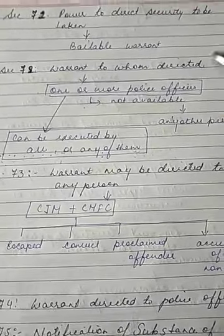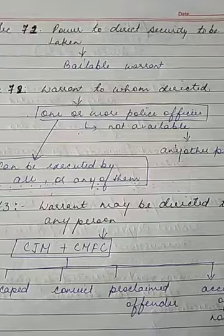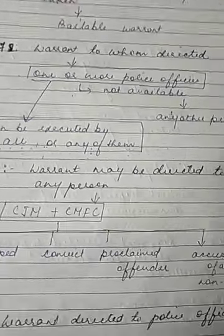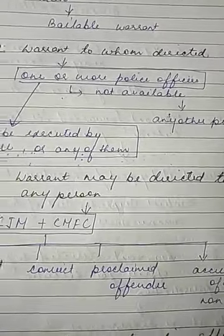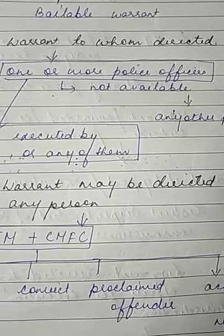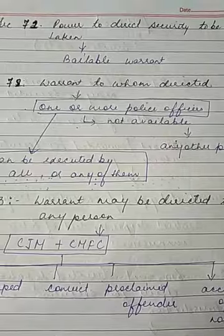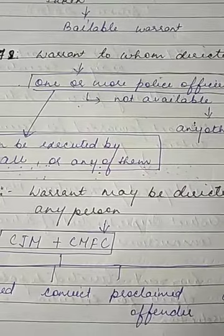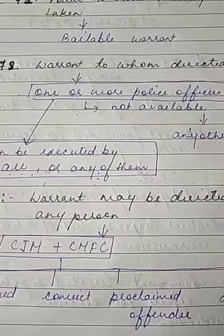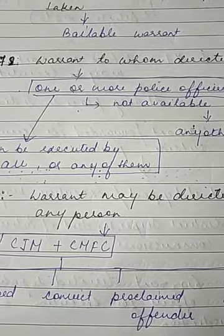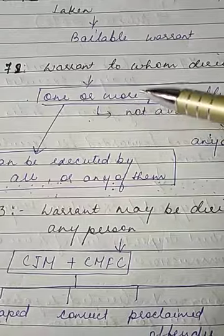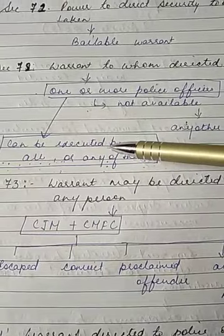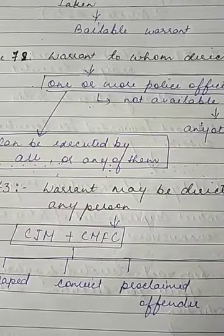Section 72 talks about warrant to whom directed. A warrant of arrest is ordinarily directed to one or more police officers to execute it. But if a police officer is not available, the court can direct any other person to execute it. And if it is directed to more than one person, any one of them or all of them can execute it.